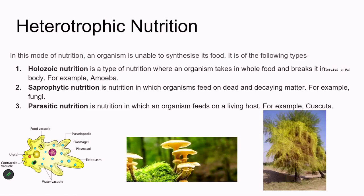The next mode of nutrition is heterotrophic nutrition. Organisms in heterotrophic nutrition are unable to synthesize their own food, so they depend on other organisms. There are three broad categories: holozoic nutrition, saprophytic nutrition, and parasitic nutrition. Holozoic nutrition is carried out by human beings and amoeba — the organism intakes whole food, digestion takes place, food is broken down, and energy is obtained.